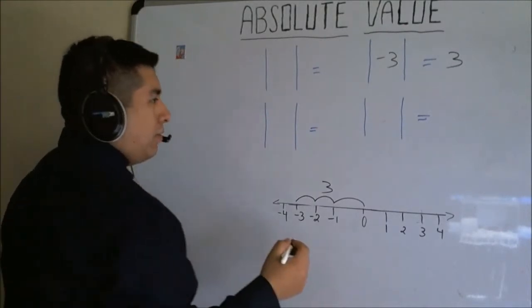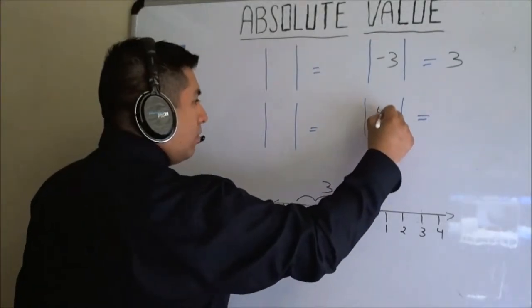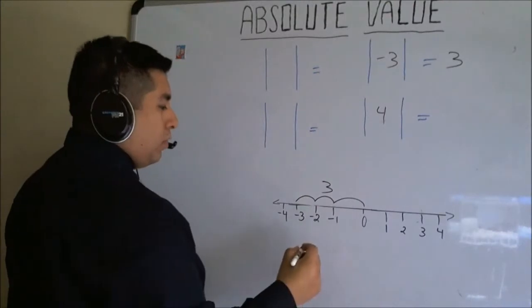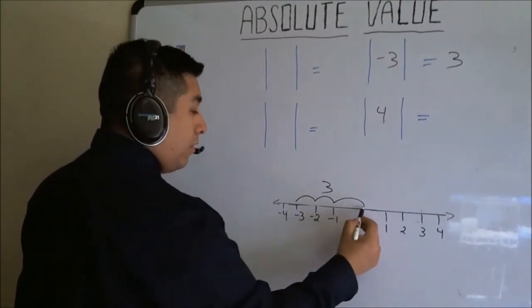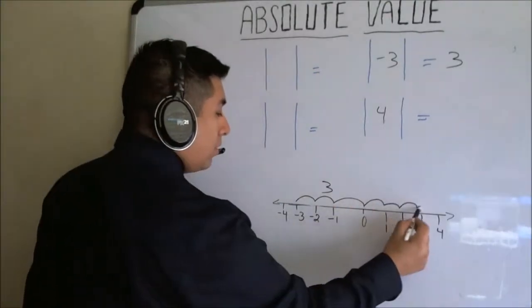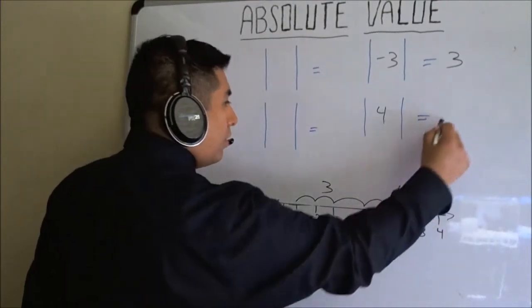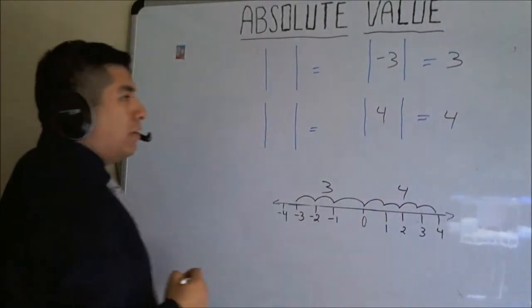Now, let's say you want to find out what's the absolute value of four. Well, what's the distance between zero and four? One, two, three, four. Four units. So the answer is four.